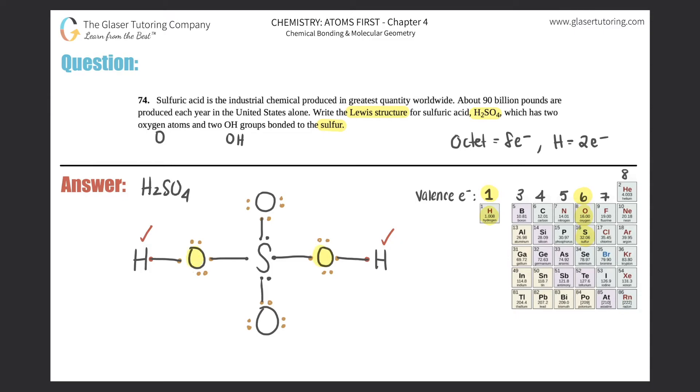Now let's check these oxygens. This oxygen has two, four, six, eight electrons. So that one has the octet. I'm going to give that one a check, which means that I cannot touch this bond. And I can't touch this bond. This oxygen has two, four, six, eight electrons. It has the octet. So I'm going to give that one a check, which means that I can't touch this bond or this bond.